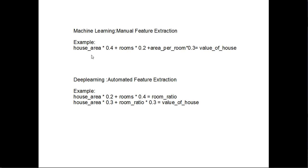Consider another example: predicting the value of a house given two predictor variables — house area and number of rooms. In machine learning you apply linear regression, get the coefficients, and also manually create a new variable like area per room. But in deep learning, you just give the variables house area and rooms, and deep learning will automatically create new features like room ratio, integrate this feature with the house area using coefficients, and then predict the value of the house.